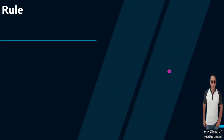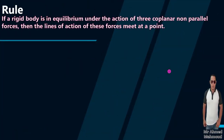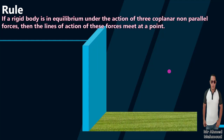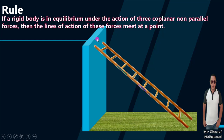Let's start with the rule of three lines of actions. If a rigid body is in equilibrium under the action of three coplanar non-parallel forces, then the line of action of these forces meet at a point. For example, if I have a smooth wall and a rough floor, and there is a ladder resting on the smooth wall.